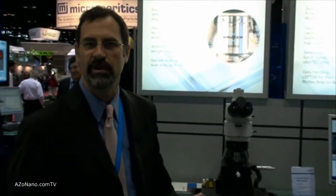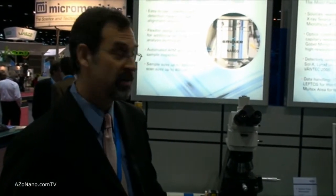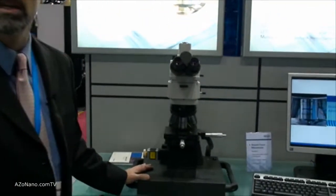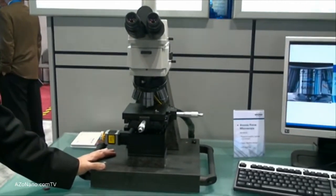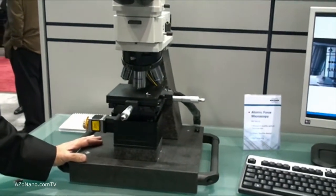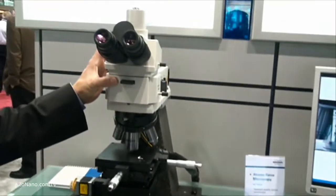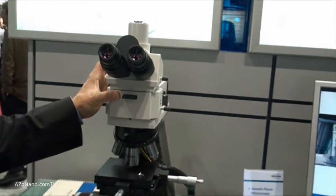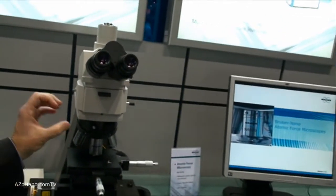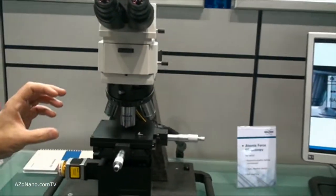So this is Bruker's new Atomic Force Microscopy line, the NANOS line, and what we have here today is a NEOS AFM. The NEOS product line is unique in that we've based our AFM onto an optical microscope. We can do this because we have a very small compact AFM.